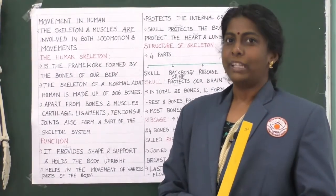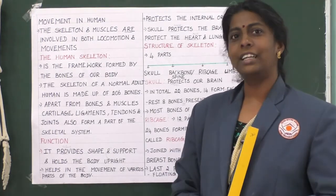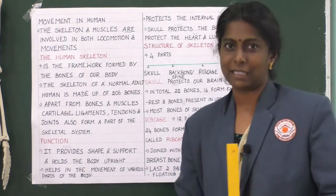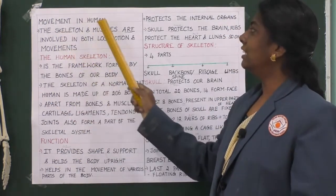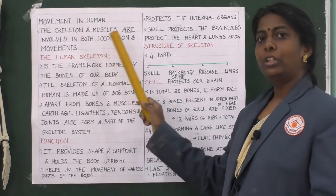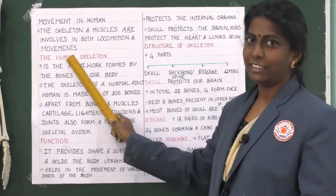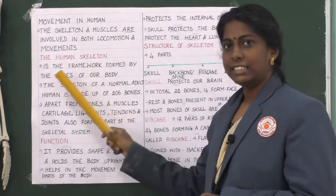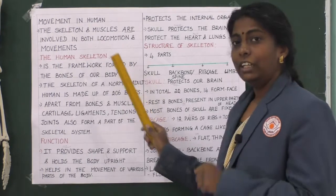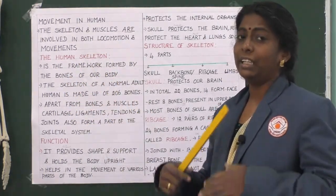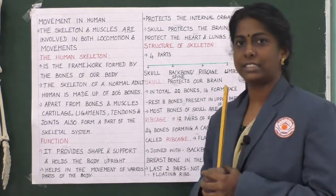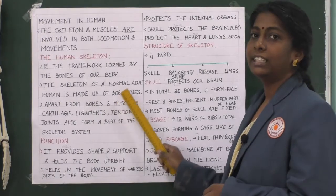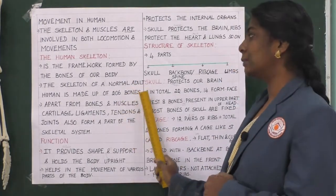Now let us learn about movement in humans. What helps humans move? The skeleton and muscles. The skeleton and muscles are involved in both locomotion and movement. The human skeleton is the framework formed by the bones of our body — it is made up of bones. The skeleton of a normal adult human is made up of 206 bones.